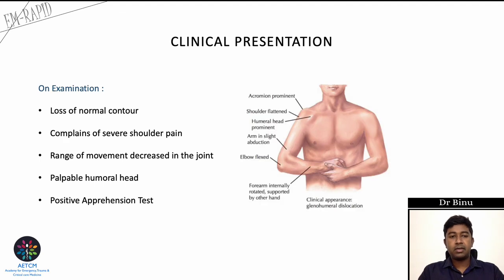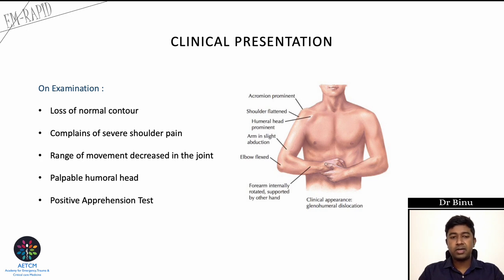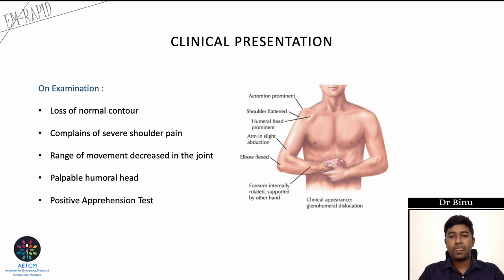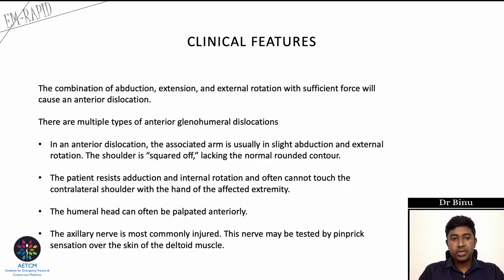On clinical examination, there is a loss of the normal shoulder contour on the affected side, and the patient will present with severe shoulder pain. Range of movement is decreased, the humeral head may be palpated, and the apprehension test for shoulder stability will be positive. The combination of abduction, extension, and external rotation with sufficient force causes an anterior dislocation.